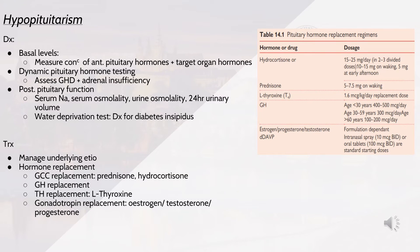For diagnosis, we look at basal levels by measuring the concentration of anterior pituitary hormones and target organ hormones. We also look at dynamic pituitary hormone testing to assess adrenal insufficiency. We assess posterior pituitary function by looking at serum sodium, osmolality, urine osmolality and 24-hour urinary volume, as well as doing a water deprivation test, which can be used for the diagnosis of diabetes insipidus.